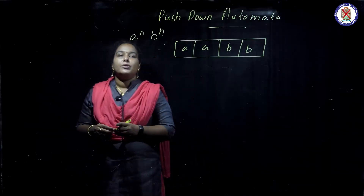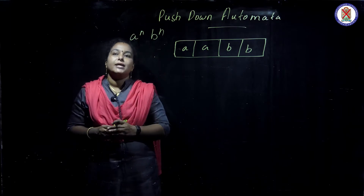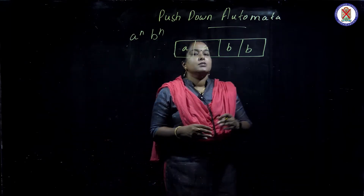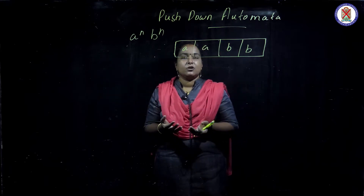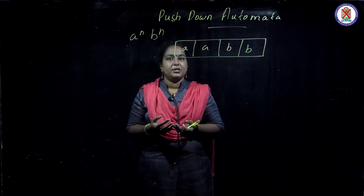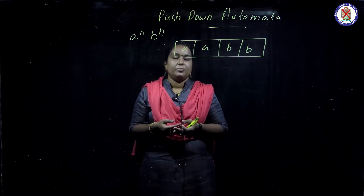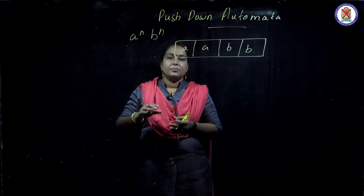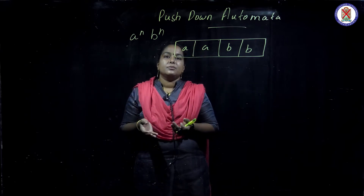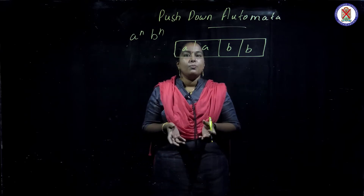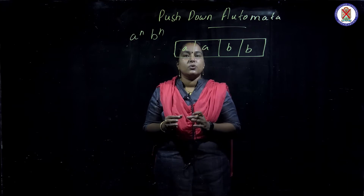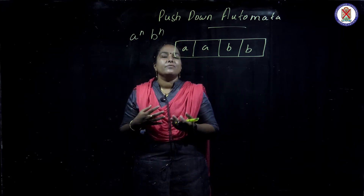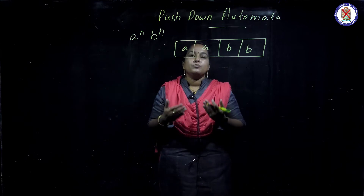Today we are moving into the next topic called Push Down Automata. Till now we have seen deterministic automata and non-deterministic automata. The defect in those is that there is no memory, so if there is no memory, no matching can occur.